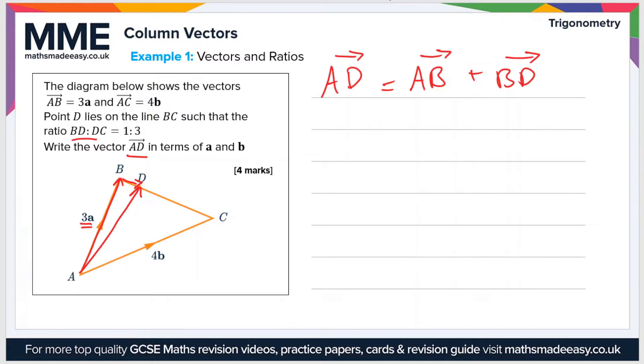So now we need an expression for BD. Well, the information in the question says that BD to DC is in the ratio 1 to 3, so let's write that on the diagram. So that's 1 to 3. So in other words, BD is a third of DC, or BD is a quarter of the total distance from B to C. So BD is equal to a quarter of BC.